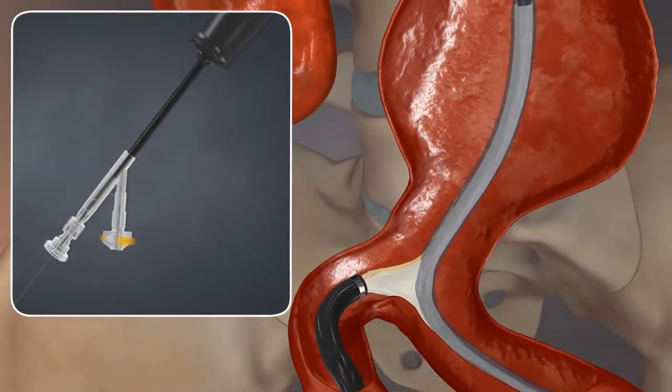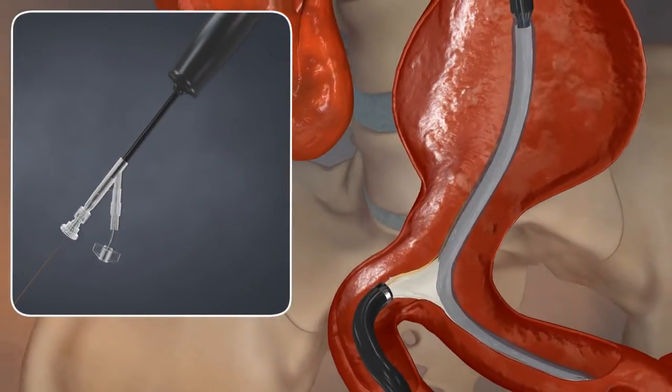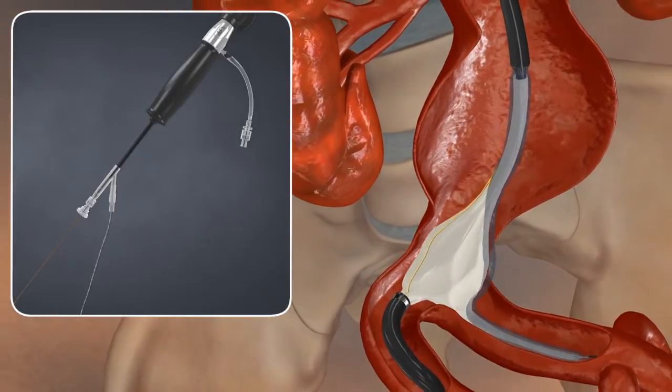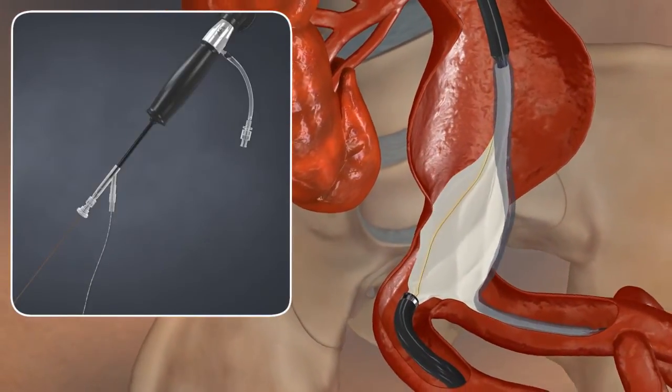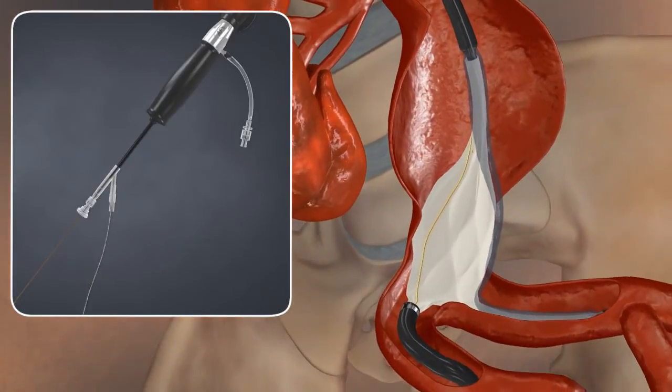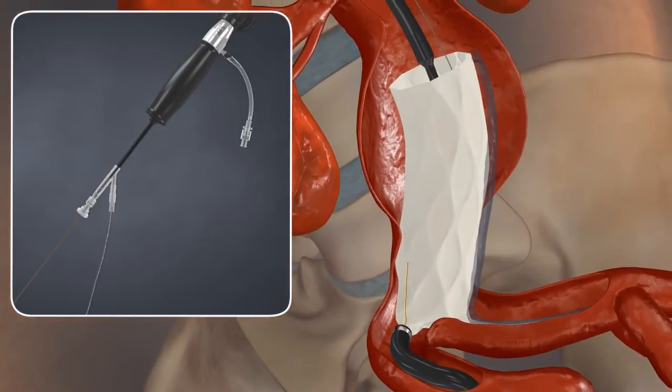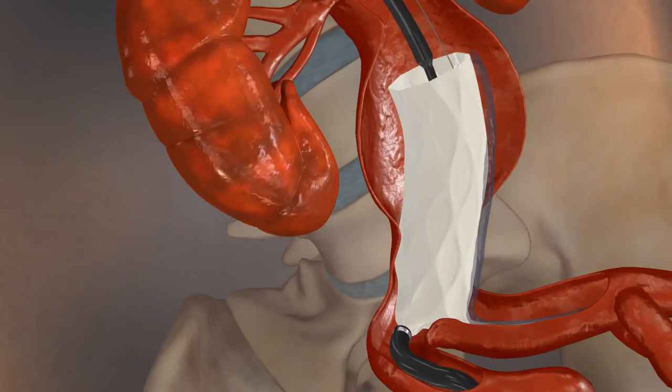To deploy the main body, twist and pull the control cord handle. If necessary, you can stop at any point to reposition the stent graft.